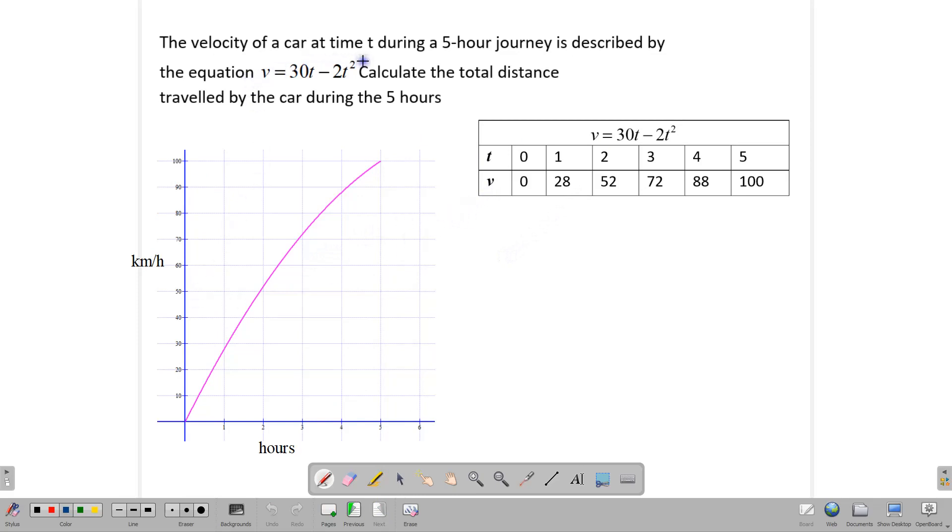We have here the velocity of a car at time t during a five hour journey described by the equation v equals 30t minus 2t squared. Our aim is to calculate the total distance traveled by the car during the five hour journey. We have one, two, three, four, five hour journey, and this graph represents the movement and speed of the car. In applying the trapezium rule, half the sum of the first and the last y values. These are our x values and these are our y values.